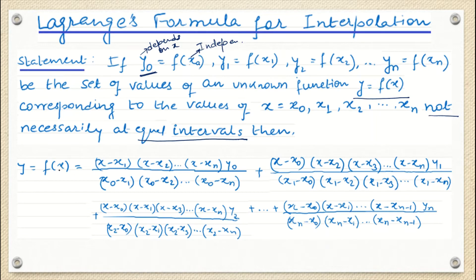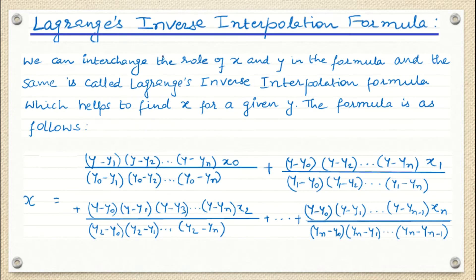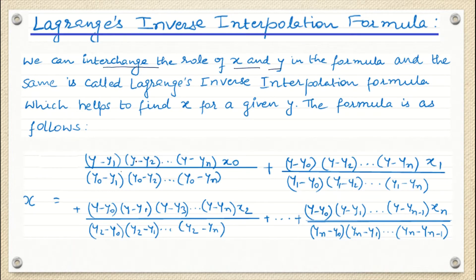What is the formula? y = f(x). The formula looks a little intimidating, but if we go into the details, it is very easy to write down. Here is Lagrange's inverse interpolation formula — the formula is straightforward. What we do here is interchange the roles of x and y from the previous formula, and then this is called Lagrange's inverse interpolation formula.